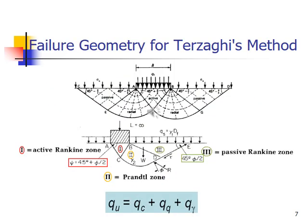Failure geometry for Terzaghi method is given. So the ultimate Q is equal to Qc plus Qq plus Qgamma, three terms. Active Rankine zone is shown, passive Rankine zone is shown, and wedge is there. A wedge type of penetration is there, and all these things are geometrically shown in the figure.